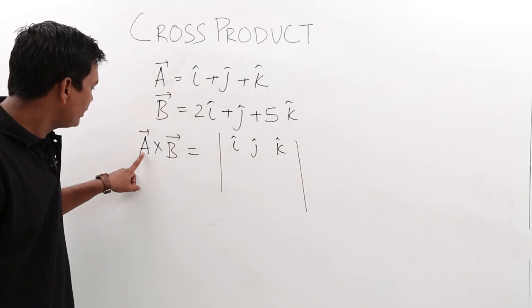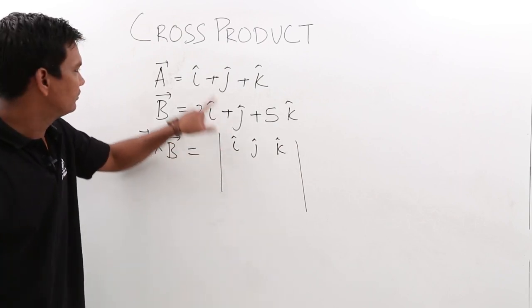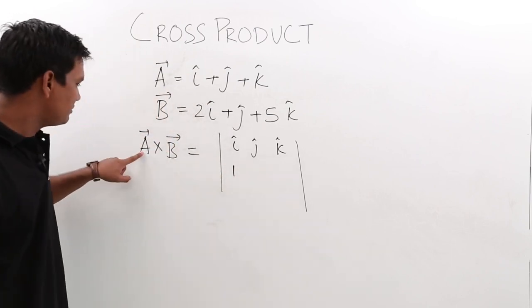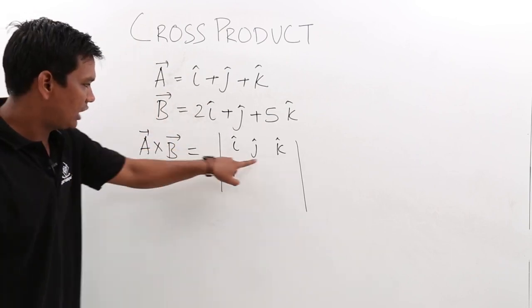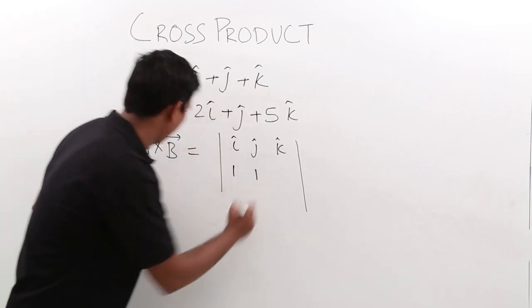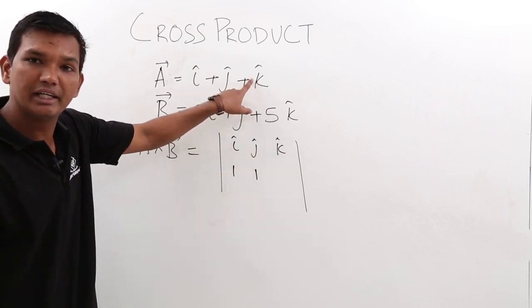What is the magnitude of a vector along i cap? It is 1. What is the magnitude of a vector along j cap? It is again 1. What is the magnitude of a vector along k cap? It is again 1.